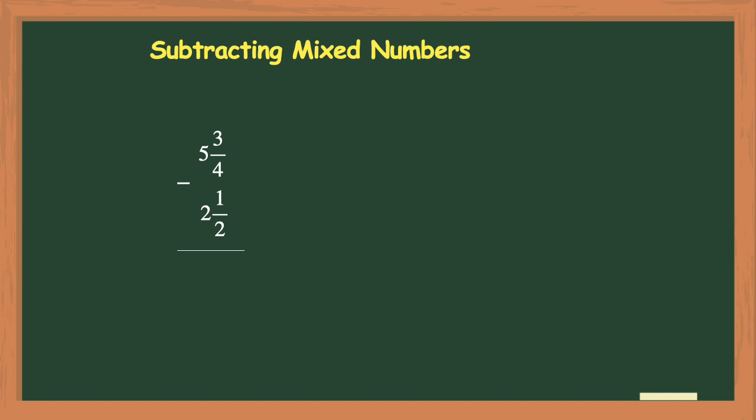Now before I begin subtracting I need to look at the denominators of these fractions. As you can see they are different. The top fraction has a 4 and the bottom fraction has a 2. So I will need to find a common denominator.